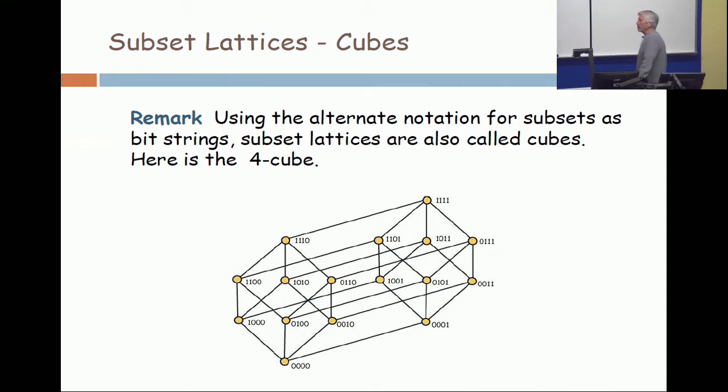So now here I've got the same picture, but the elements, rather than being considered as sets, are being considered as bit strings. So the bit string 0000 says the first element is not in, the second element is not in, the third element is not in, the fourth element is not in, so nobody is in. So the bit string all zeros corresponds to the empty set, and the bit string all ones corresponds to the entire set. So this is taking us back maybe to the first or second class of this course.